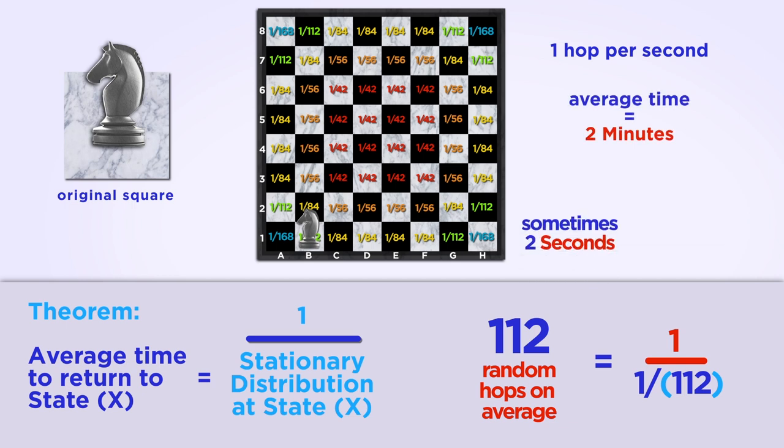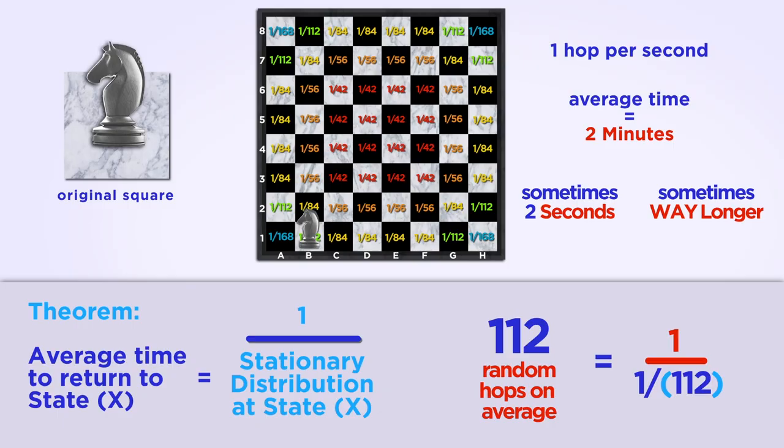So, if it hopped once a second, the average amount of time it would take to return is a little under 2 minutes. But, as we saw earlier, it will sometimes return in just 2 seconds. So, in order for the average to be as big as 2 minutes, the knight must sometimes spend a long time hopping around before finding its way home.